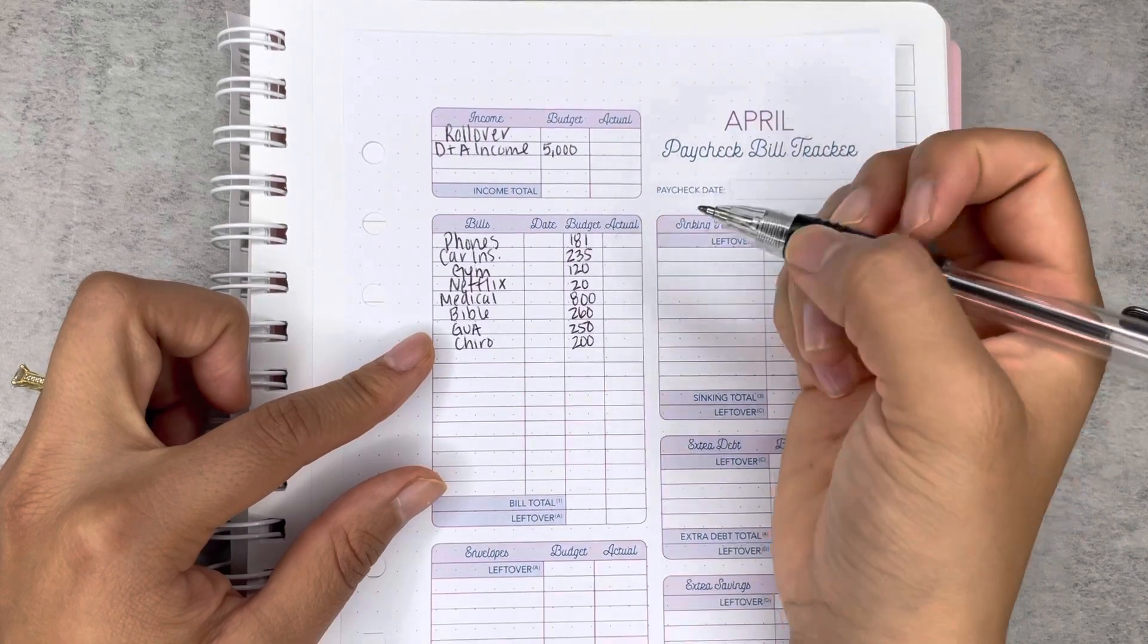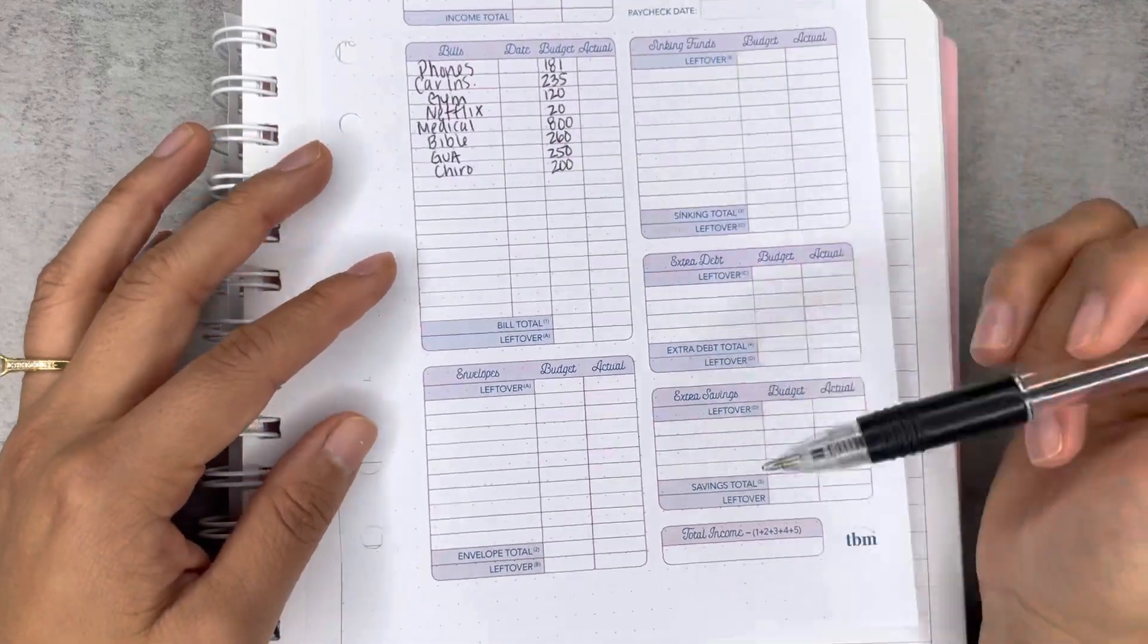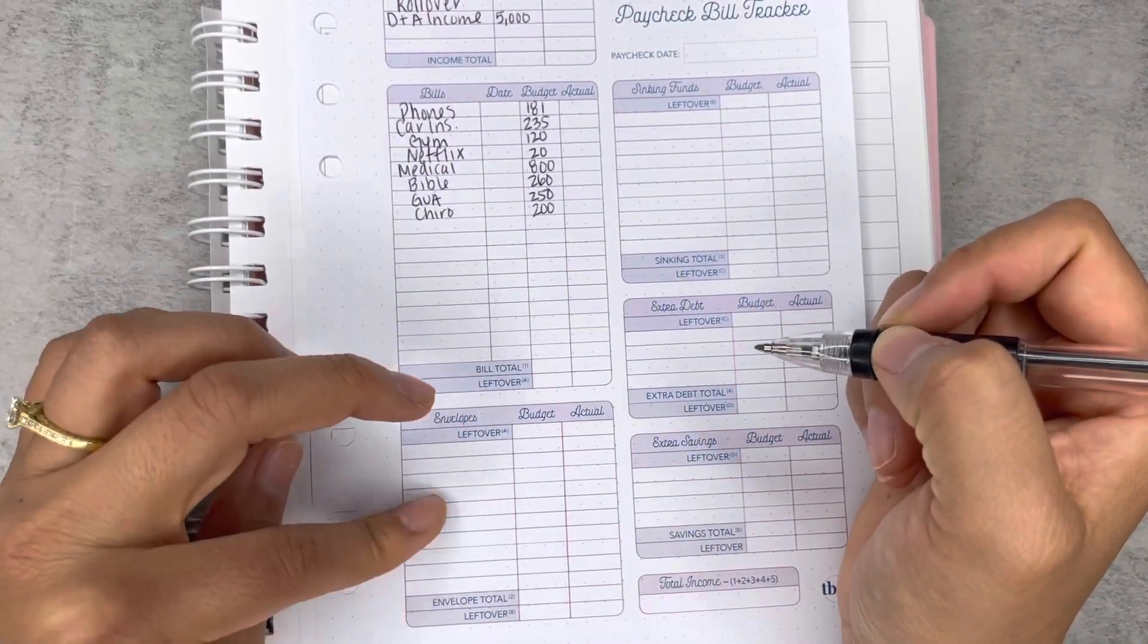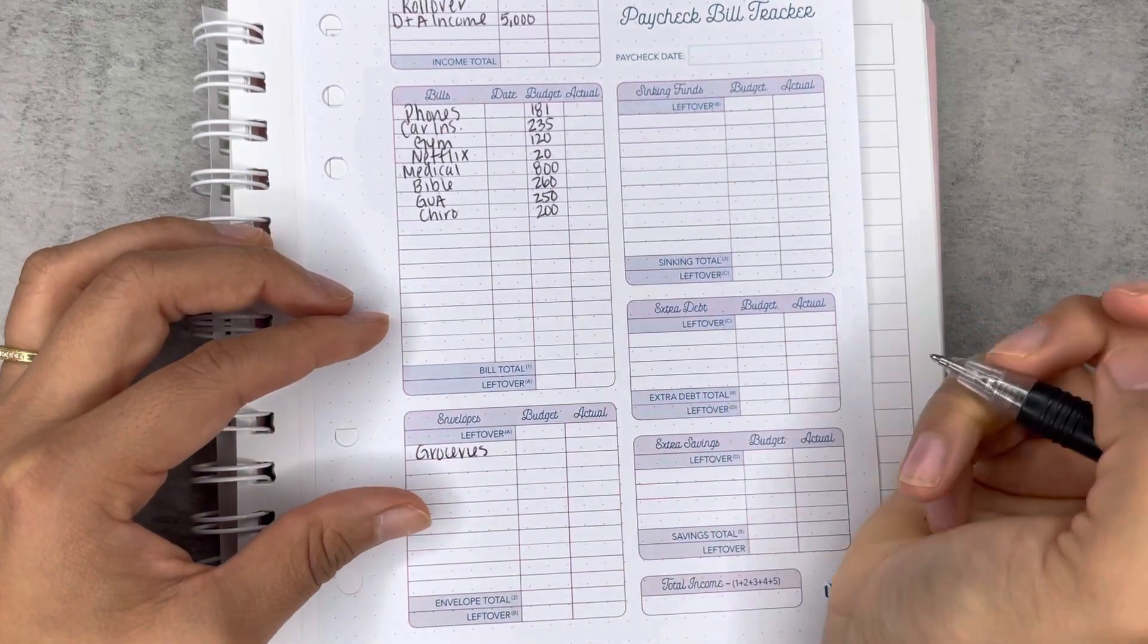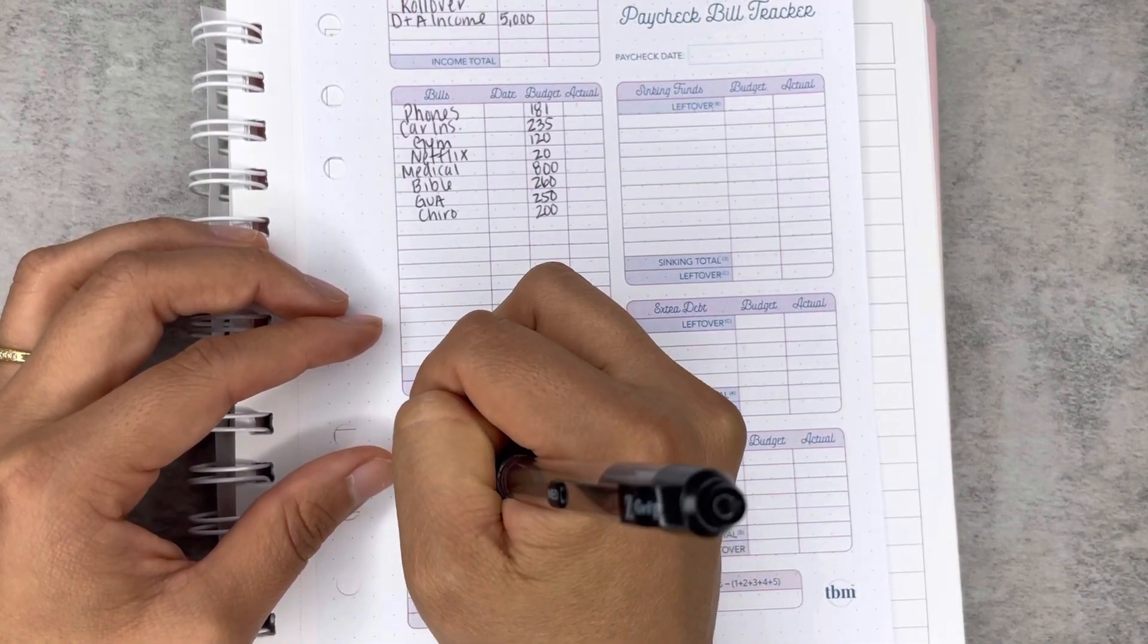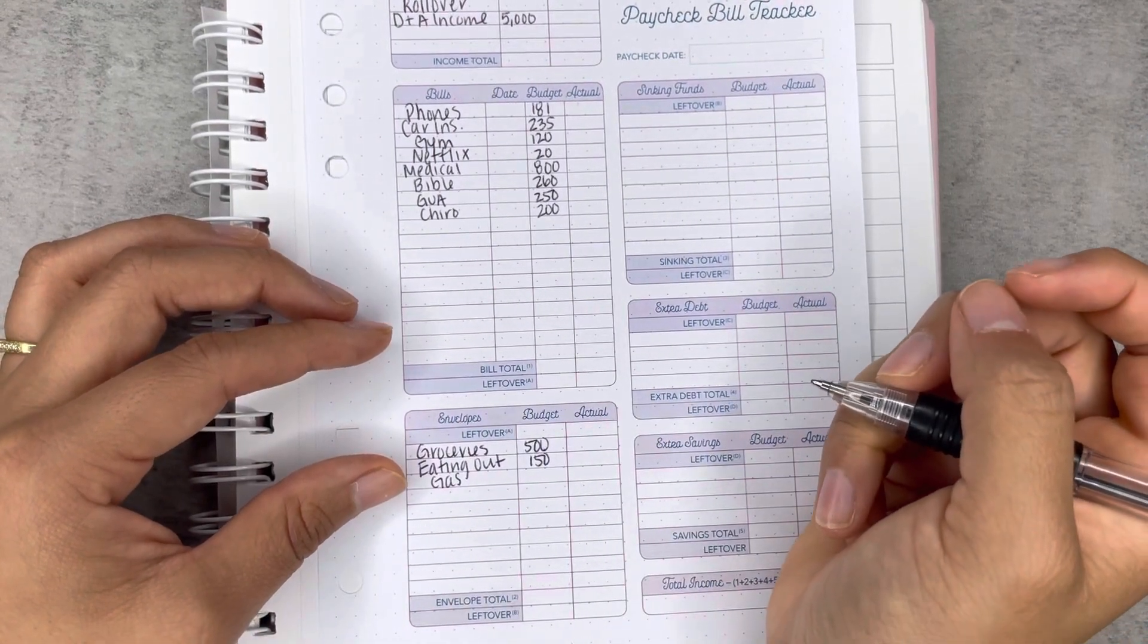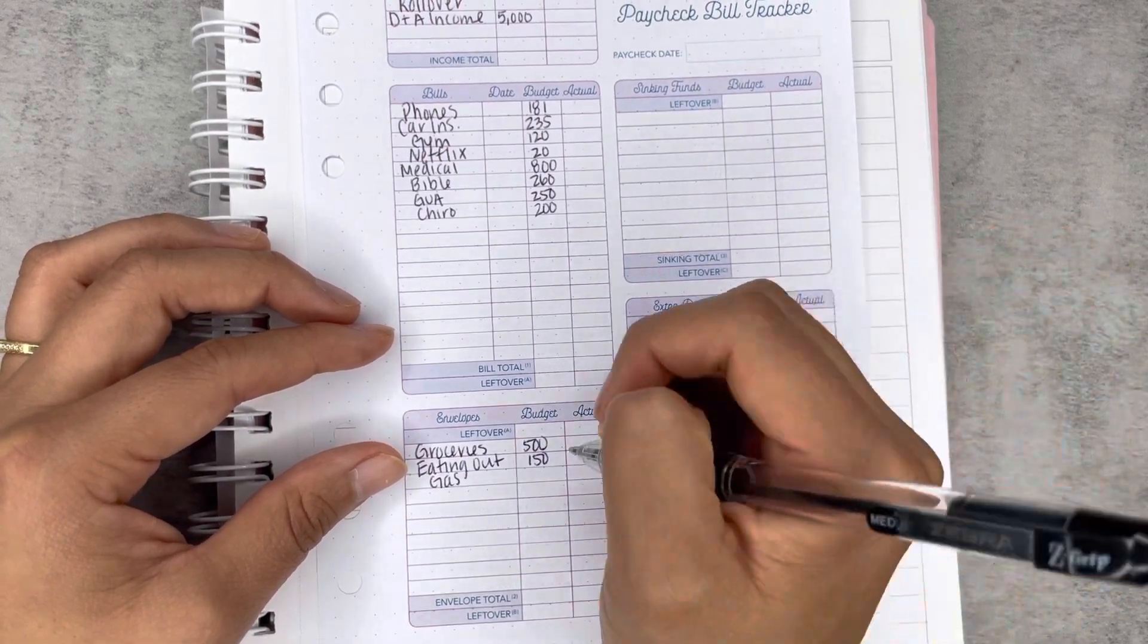Moving on to envelopes here. I'm thinking of doing my own version just because I don't really separate certain categories. So this always throws me off. But I'm going to do variable expenses down here. We're going to do groceries at $500. We've been doing pretty well with this number despite the rise in food and the inflation. Eating out, we're going to do $150. Gas has kind of been going a little over $5, under $5. It's hanging around the $5, averaging around $5 per gallon here in the Bay Area. So we're going to do $150.